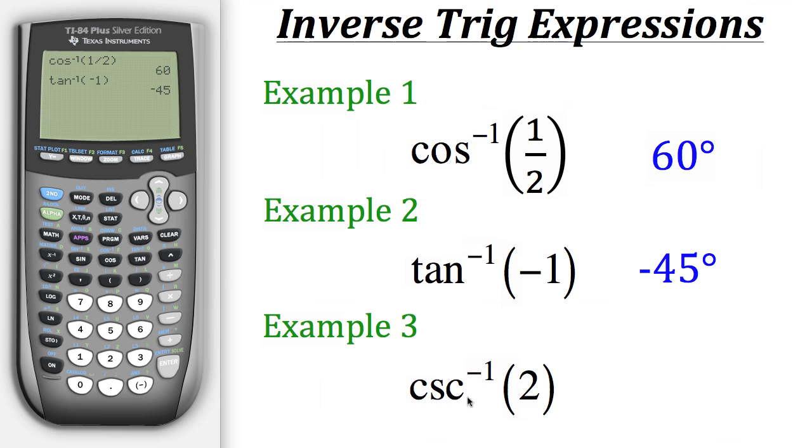Now since the reciprocal of cosecant is sine, we'll need to use the inverse sine. But in order to make it equivalent to doing the inverse cosecant, we need to take the reciprocal of 2. So in order to rewrite this to have the same exact value, we would evaluate the inverse sine of 1 half, because sine is the reciprocal of cosecant and 1 half is the reciprocal of 2.